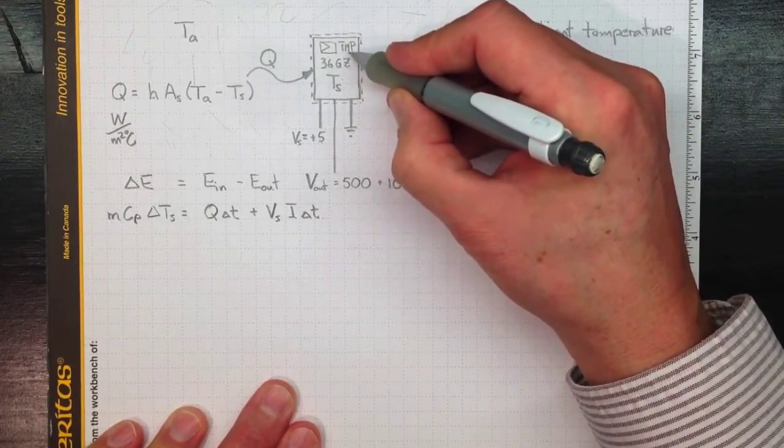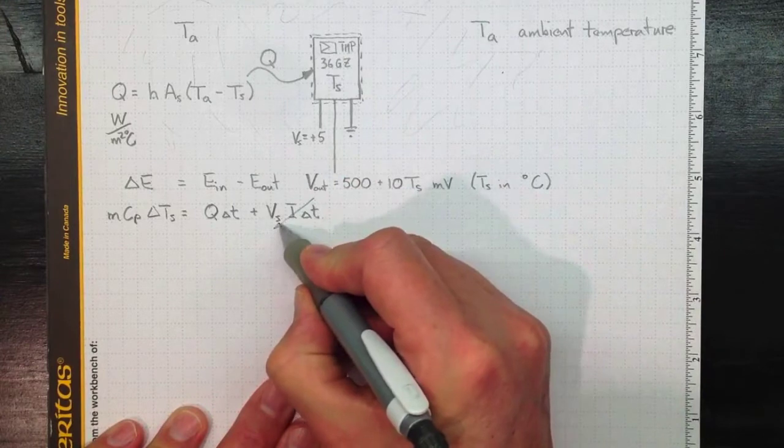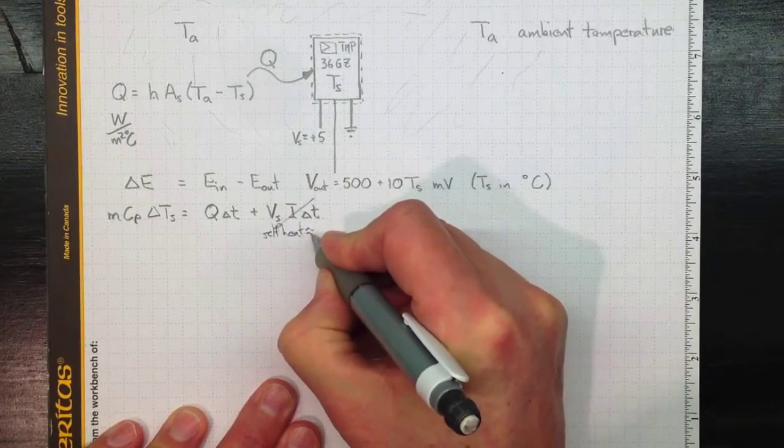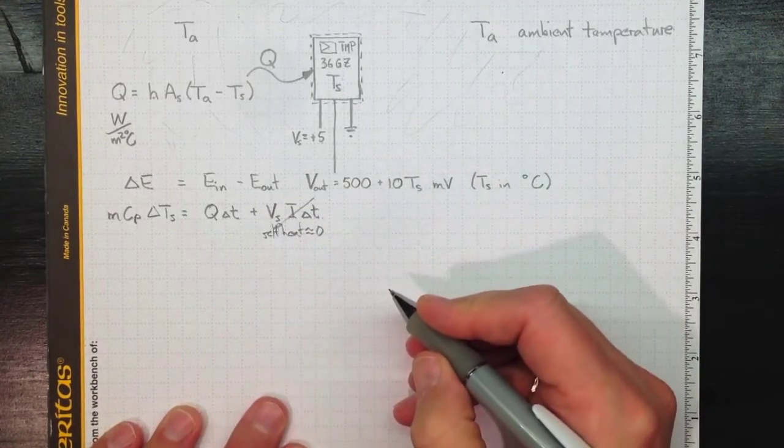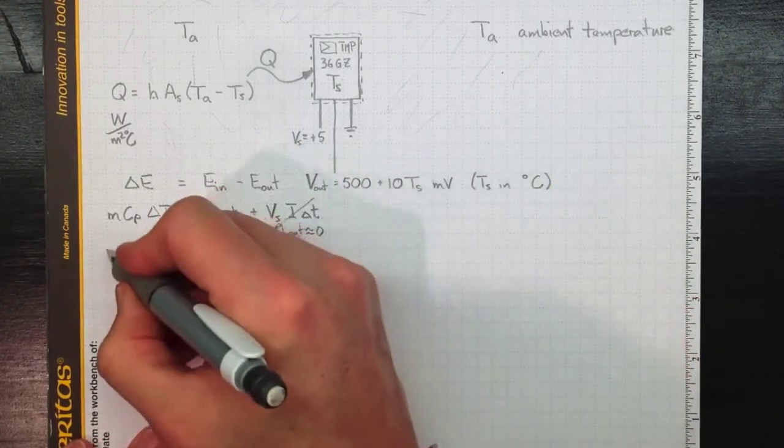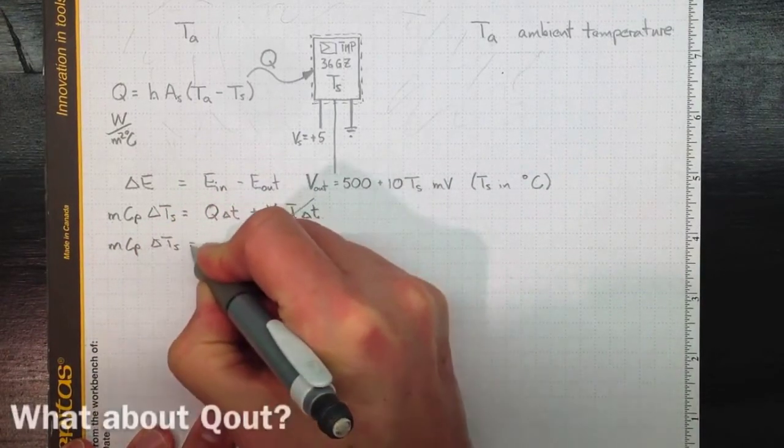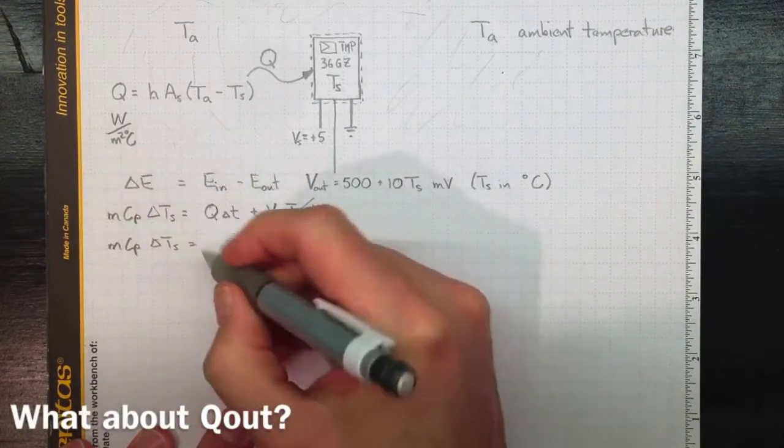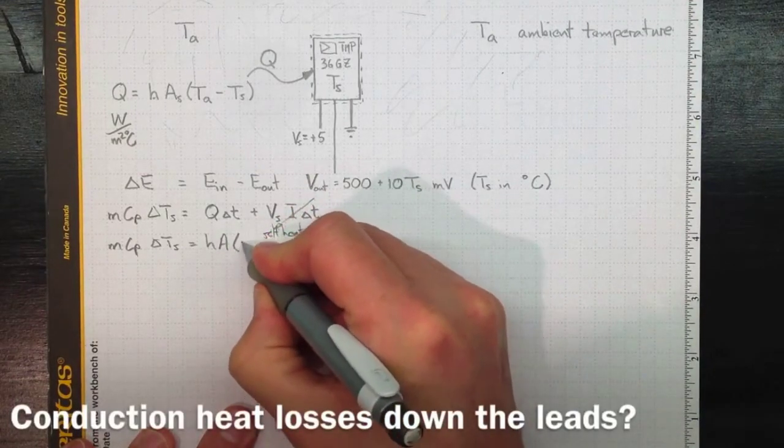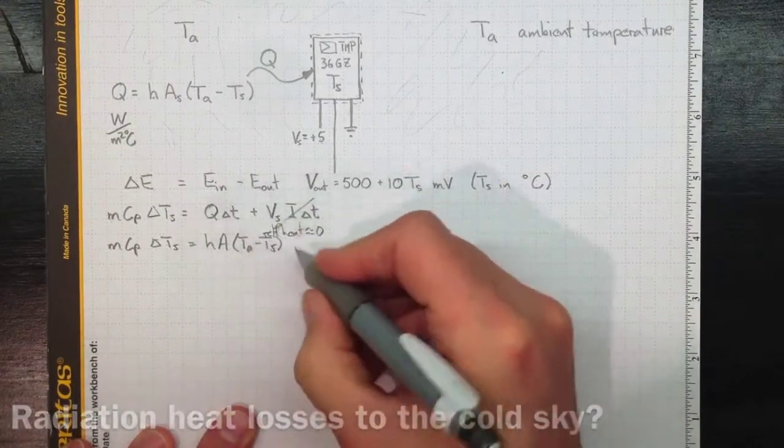I read the data sheet, and the values for the TMP36 are really small, so we're going to ignore the self-heating for the moment. We'll say it's approximately equal to zero. But that's something you should discuss when you're looking at the errors in your temperature measurement. So we'll wind up with MCP delta TS equal to Q, which is H times A times TA minus TS, all times delta T.